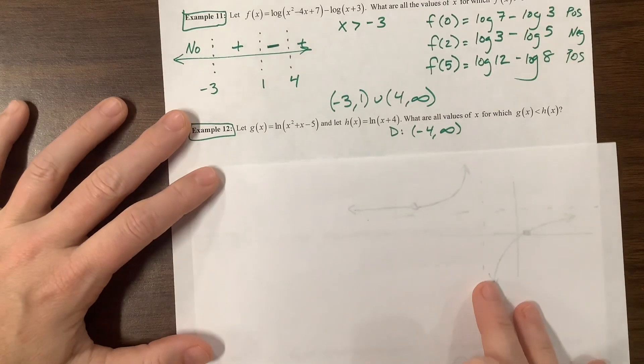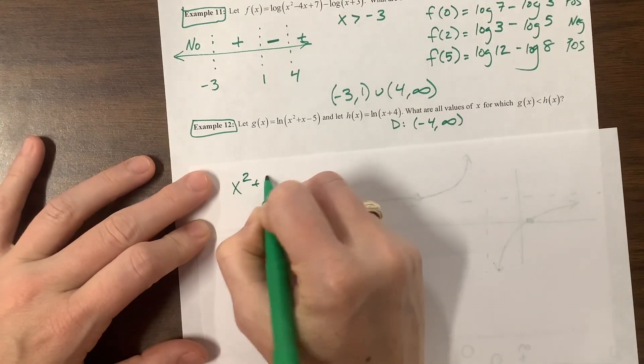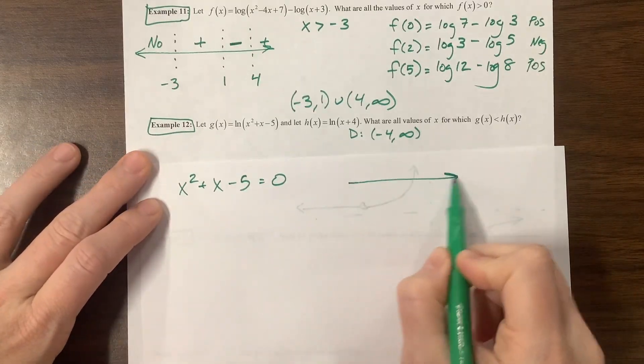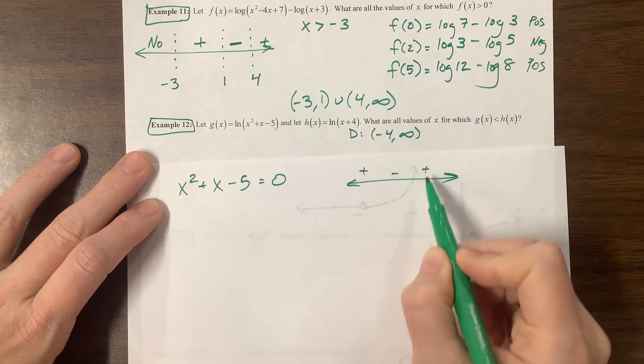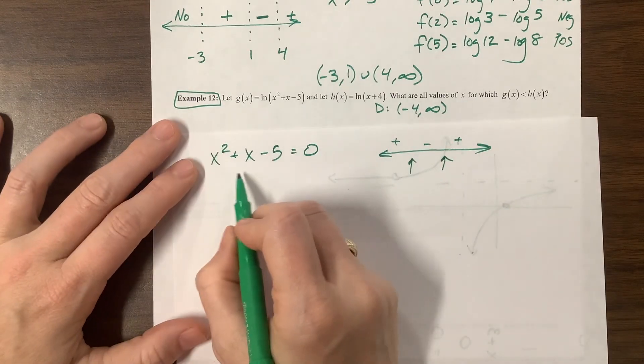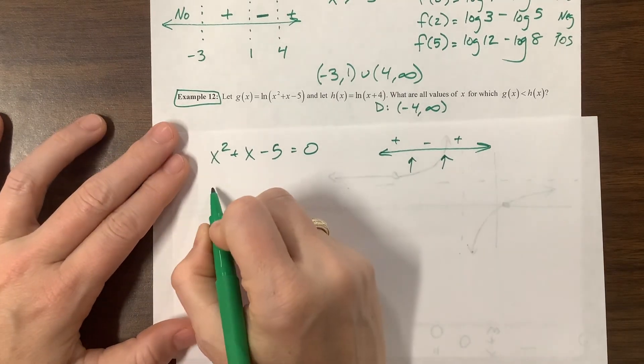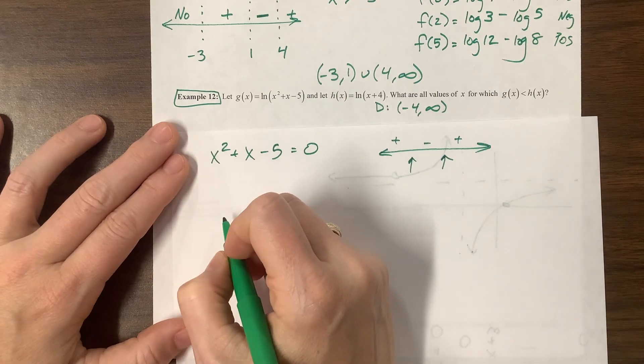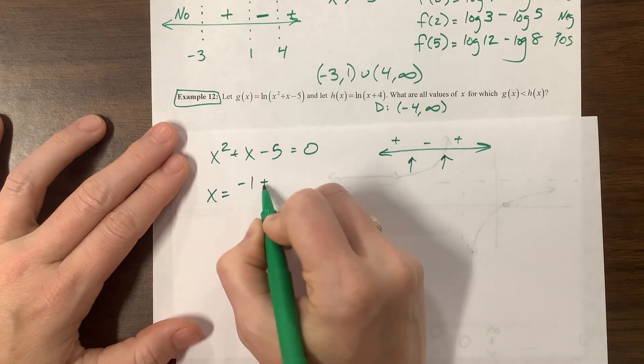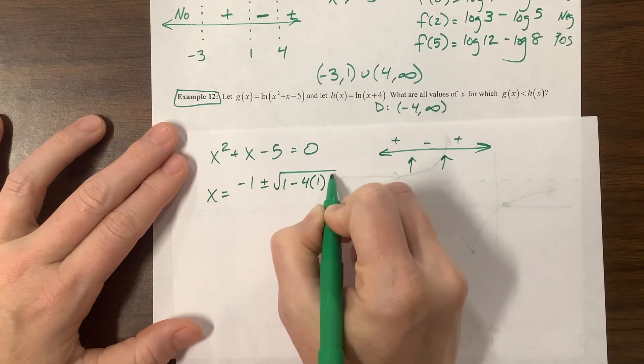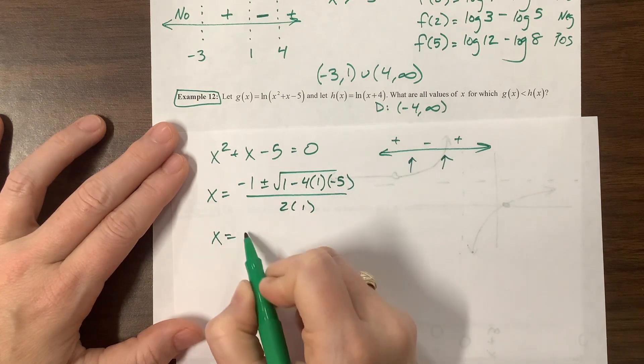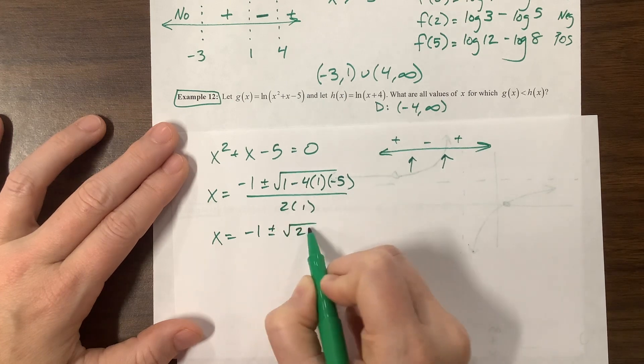So what I might do is say x squared plus x minus 5 equals 0. I know it's opening up, so if I did a sign diagram for that, when I find its zeros, it's going to go positive, negative, positive. I just don't know where these zeros are. Completing the square gives me fractions, so I'll just do the quadratic formula. x equals negative b plus or minus the square root of b squared minus 4ac all over 2a. So we end up with x is equal to negative 1 plus or minus the square root of 21 over 2.